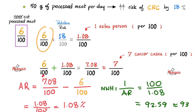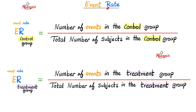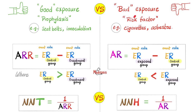The event rate is the number of events in a certain group divided by the total number of subjects in that group. There is an event rate for the control group and an event rate for the treatment group. There is good exposure — like installing seatbelts, vaccinations — and bad exposure or risk factors, such as cigarettes, asbestos, lead, and arsenic.